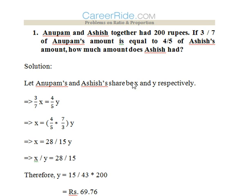So we would assume Anupam's and Ashish's shares to be x and y respectively. So 3/7 of Anupam is equal to 4/5 of Ashish, so 3/7 x would be equal to 4/5 y.